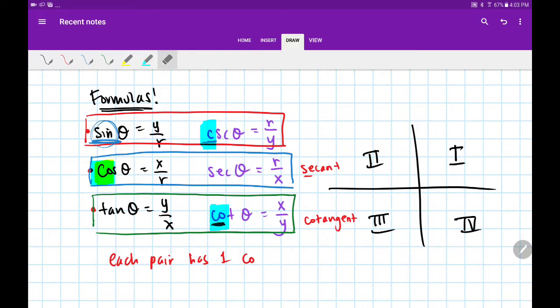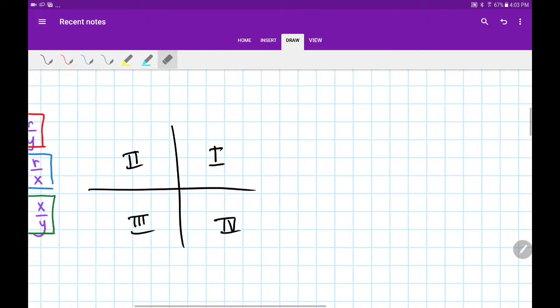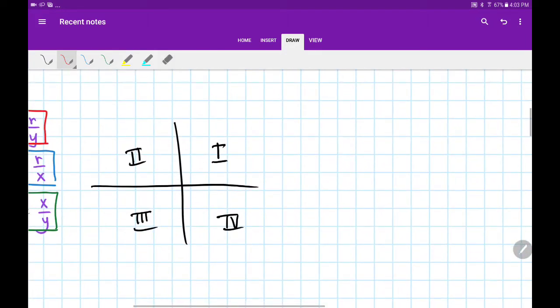That's our formula review. Last thing I want to go over is our quadrants. Remember that x and y can be positive or negative depending on the quadrant, but r is always positive.